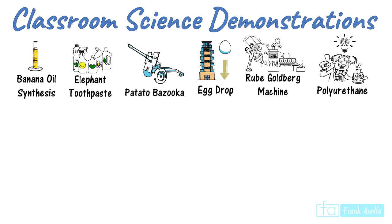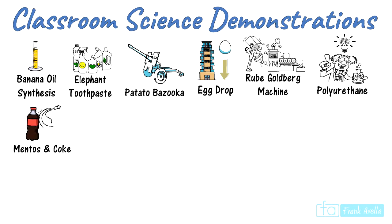The next demonstration, which most students have already seen, probably on social media, is the Mentos and Coke experiment. The secret to really making this work is you have to have the soda warm — it has to be hot. The heat increases the speed of the chemical reaction. Don't use cold soda.